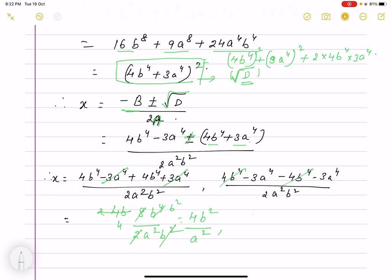For the second value, taking the minus sign: (4b⁴ - 3a⁴ - 4b⁴ - 3a⁴) / (2a²b²) = -6a⁴ / (2a²b²) = -3a² / b². These are the two values of x. This way you will find out the value.